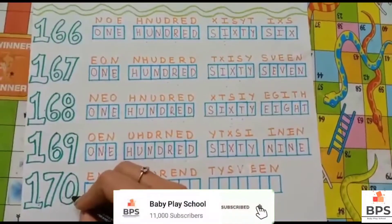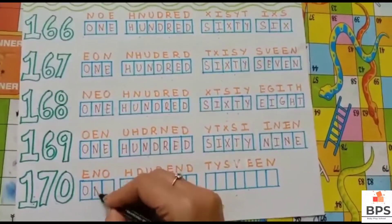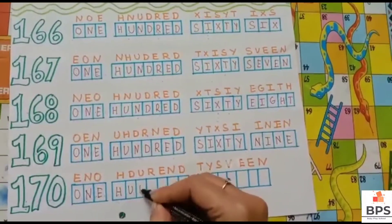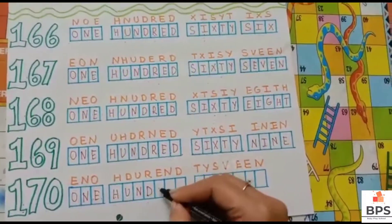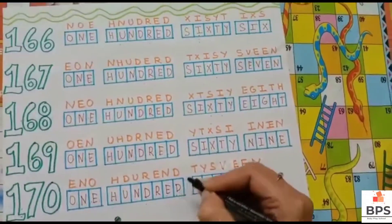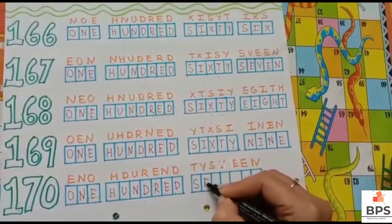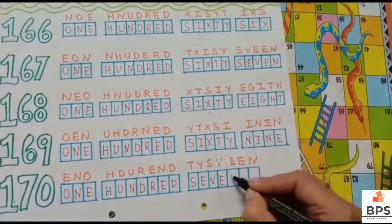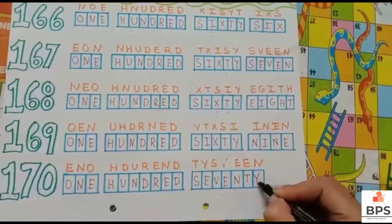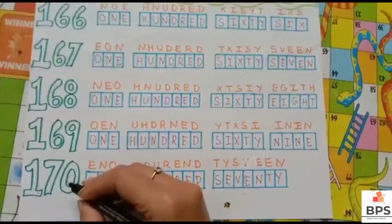One hundred seventy. 170. O-N-E, one. H-U-N-D-R-E-D, hundred. S-E-V-E-N-T-Y, seventy. One hundred seventy.